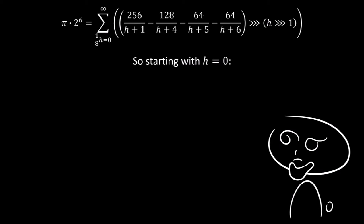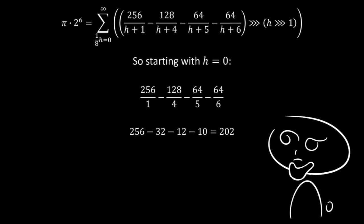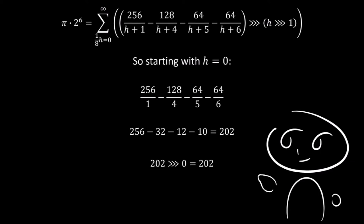So if we start with h equal to 0, this gives us the fractions 256 divided by 1, minus 128 divided by 4, minus 64 divided by 5, minus 64 divided by 6. That gives us 256 minus 32, minus 12, minus 10, which equals 202. Then we right shift that h divided by 2 times, which is 202 right shifted 0 times, to give us 202. Then we add it to our current value for the answer. The answer starts out as 0, so 0 plus 202 equals 202.